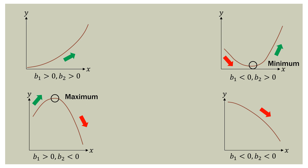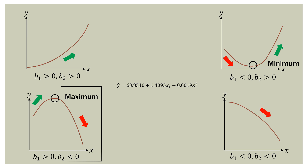This is our regression equation from the quadratic model. Our first term, b-sub-one, is 1.4095 — positive. Our second term, b-sub-two, is 0.0019 — that's negative. So if b-sub-one is positive and b-sub-two is negative, we get the hill shape: the graph goes up then comes back down. The sign of each term in the quadratic model indicates the general shape of the data.